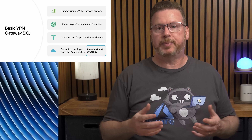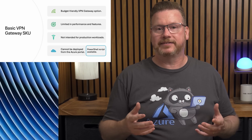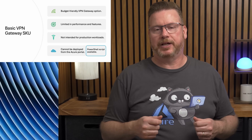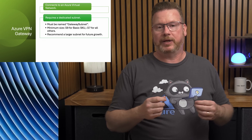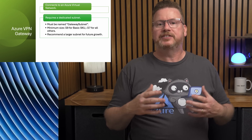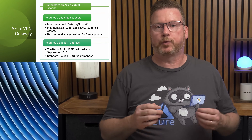One thing to keep in mind: you can't deploy the basic VPN SKU from the Azure portal — it has to be done using PowerShell or the CLI. I created a PowerShell script to handle that and we'll go through it step by step in the demo. The VPN gateway connects to a virtual network in Azure and requires a dedicated subnet called the gateway subnet. For the basic SKU that subnet needs to be at least a /29; other SKUs require /27 or larger. It's a good idea to make it bigger so we can scale up in the future.